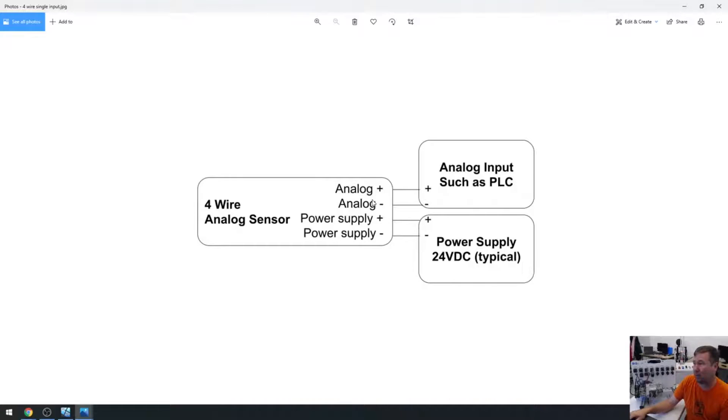Also, you have a three wire device. And on a three wire device, the analog minus and the power supply minus will be internally jumpered. So a three wire device will be wired typically like a four wire device.